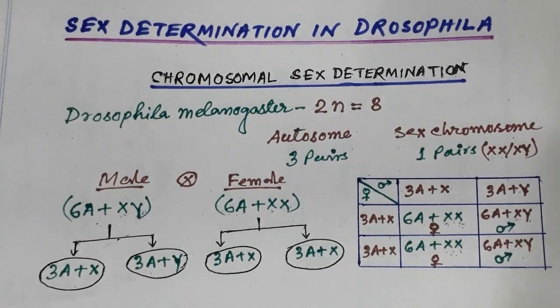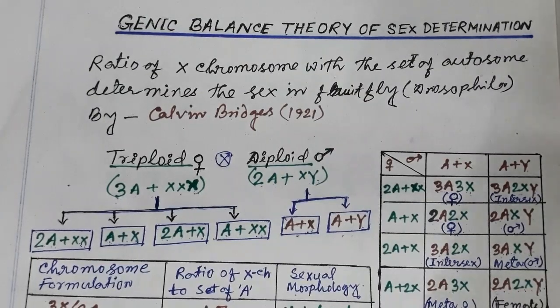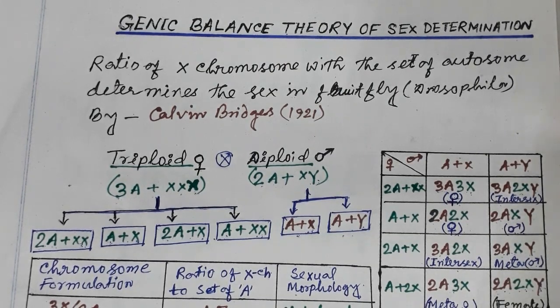What is the genic balance theory of sex determination? This theory was proposed by Calvin Bridges in 1921. He proposed that the ratio of the X chromosome to the set of autosomes determines the sex in the fruit fly, Drosophila.